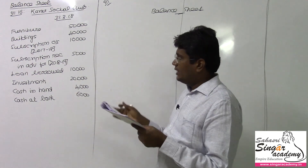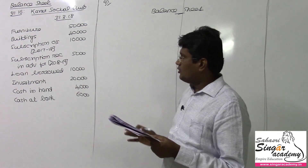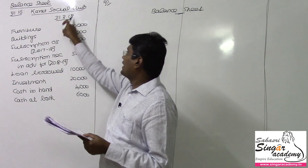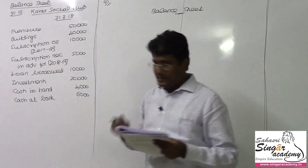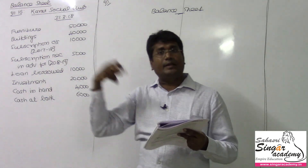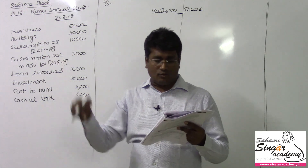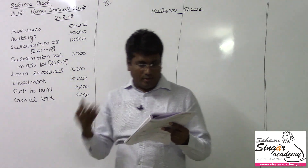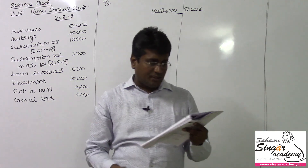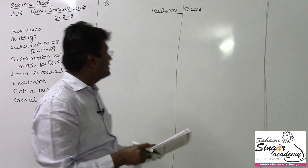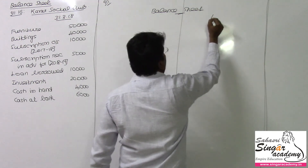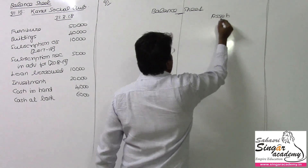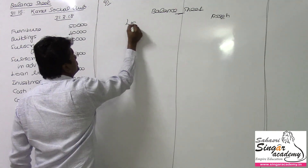The items given are: furniture, building, subscription outstanding for the current year 2017-18, subscription received in advance for next year, loan borrowed, investments, and cash in hand and bank. We will classify these into assets and liabilities.